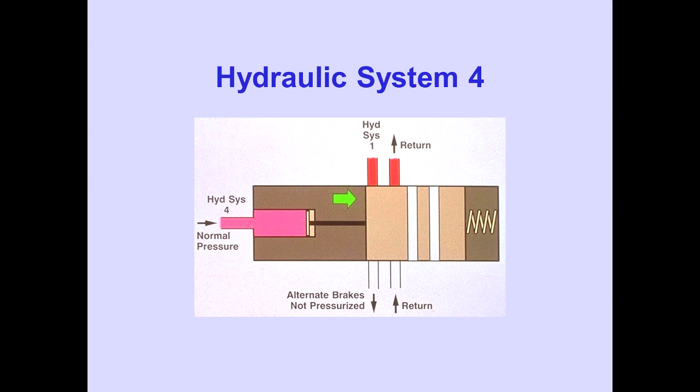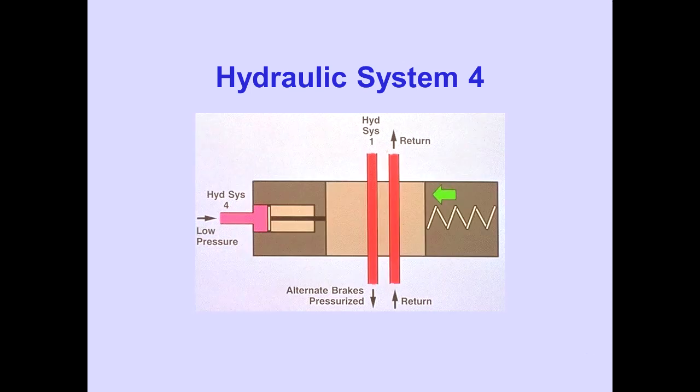Hydraulic system 4 pressure controls the alternate source select valve. When hydraulic system 4 pressure is normal, the valve is held closed and the alternate brake system is not pressurized. When hydraulic system 4 pressure is low, the source select valve automatically opens, and hydraulic system 1 then pressurizes the alternate brake system.